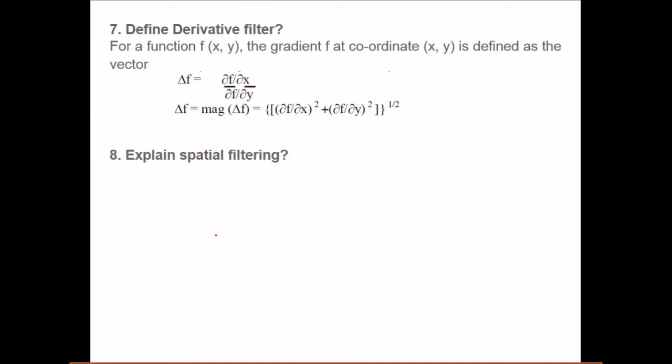Define derivative filter. For a function f(x,y), this is a two-dimensional function which is our image. The gradient f at coordinate (x,y) is defined by derivative filter: del f by del x divided by del f by del y. The magnitude is the square root of the sum of squares.